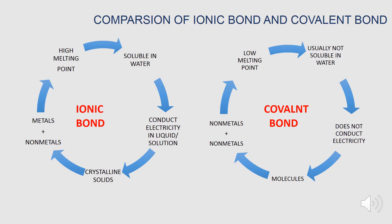Now let's see the comparison of the ionic bond and the covalent bond. Ionic bonds have a high melting point. They are soluble in water. They conduct electricity in the liquid or in solution. They are in crystalline solid forms. Ionic bonds are formed between metals and non-metals.